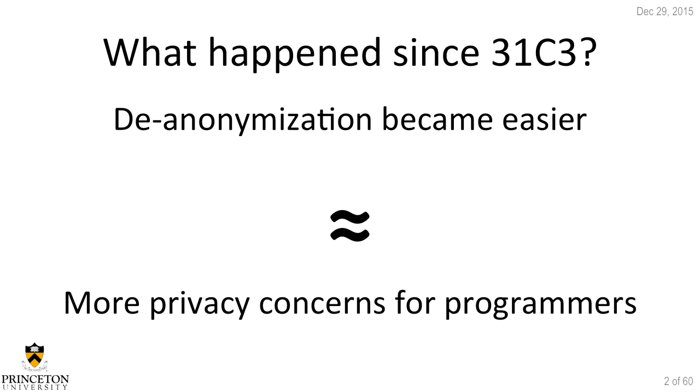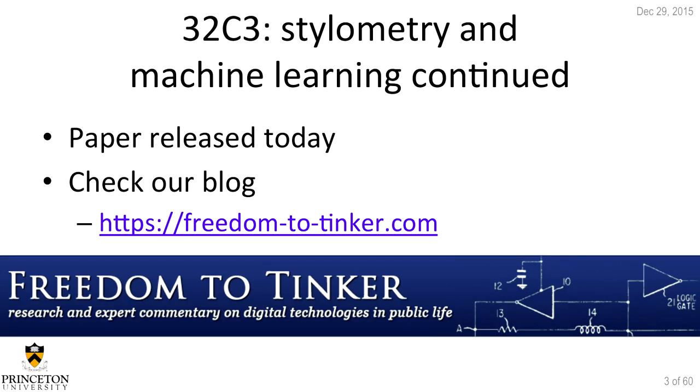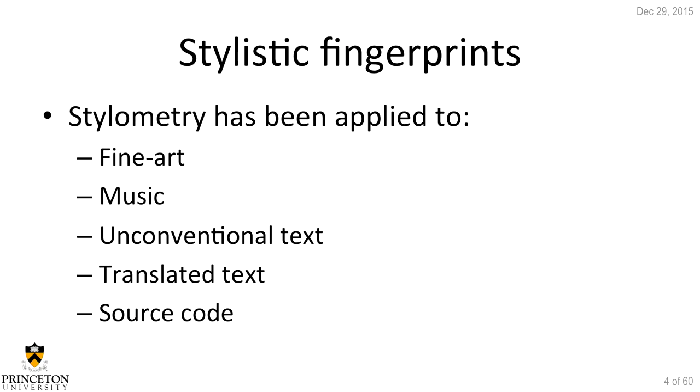I'll talk about stylometry and machine learning today. What happened since last year? Last year I talked about anonymizing programmers for about 15 minutes; this year anonymization just became easier, which is kind of equivalent to the fact that there are more privacy concerns for programmers now and also open source software developers. We released our most current paper on this — it's on arXiv and on my website — and if you want a summary, you can also check our blog, Freedom to Tinker. Let's start talking about stylistic fingerprints.